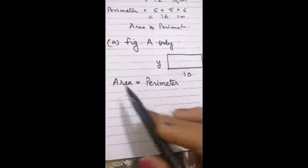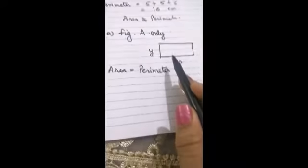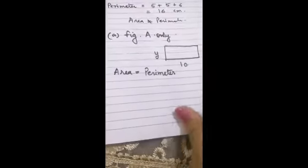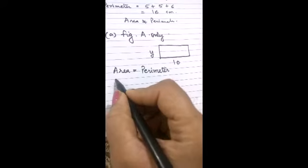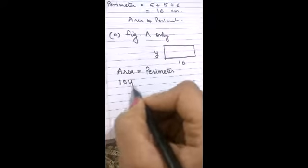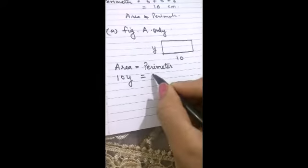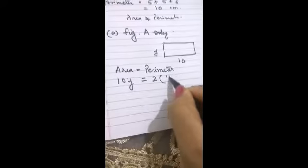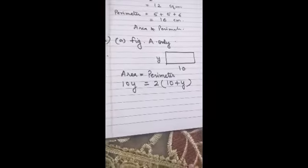Now we come to question number 12. In question number 12 it is asked that if it is given that this rectangle is an equable shape then find Y. So we will have to put the area to be equal to perimeter. That means we have to put area will be 10Y should be equal to 2 into 10 plus Y. So this becomes a simple equation which we can solve.